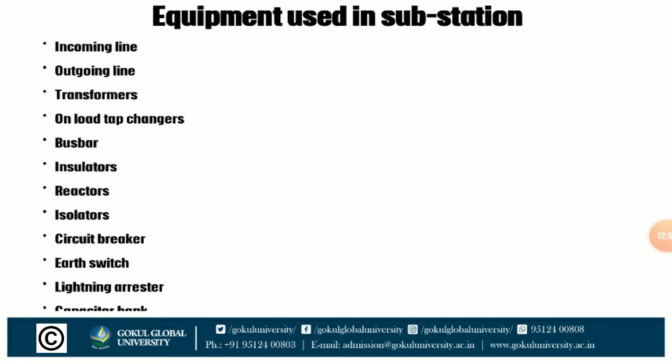Now we discuss about the equipment used in substations. First, the incoming line supplies power to the substation — these are high voltage transmission lines coming from transformer substations or generating stations. Second, the outgoing line is the line which leaves the substation at the step-down voltage of the transformer. Third, the transformer's main function is to step up or step down the voltage as required. Fourth, the on-load tap changer changes the transformer output voltage when the transformer secondary is connected with load.